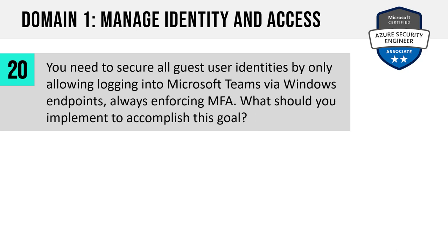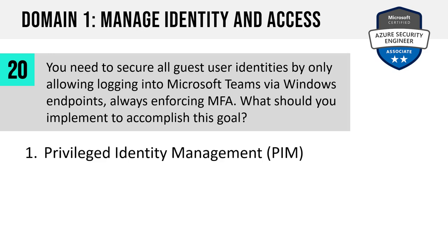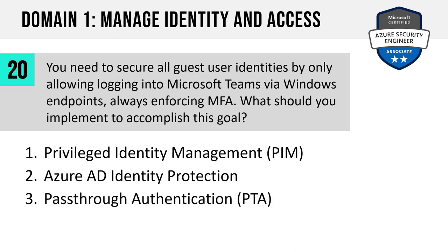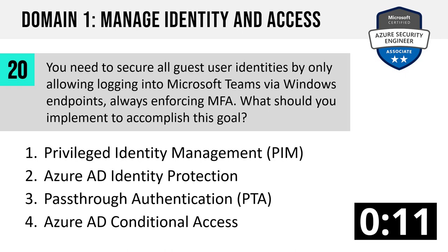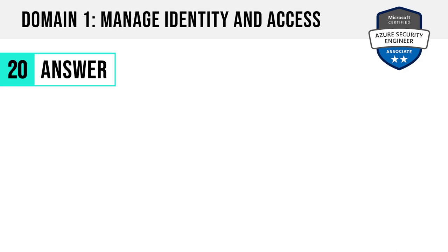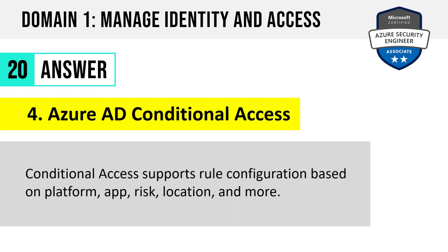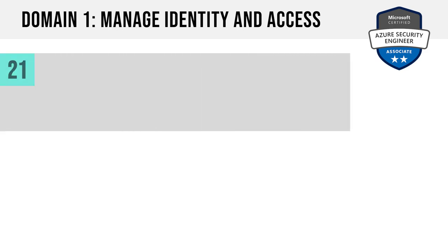Question 20. You need to secure all guest user identities by only allowing logging into Microsoft Teams via Windows endpoints, always enforcing multi-factor authentication. What should you implement? Privileged Identity Management, Azure AD Identity Protection, Pass-Through Authentication, or Azure AD Conditional Access? The answer is four: Azure AD Conditional Access. Conditional Access supports rule configuration based on platform, app, risk, location, and more. Domain 1 of this exam is Manage Identity and Access, so you can definitely expect some questions around Azure AD as Microsoft's identity platform.